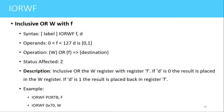The next instruction is IORWF — Inclusive OR W with the file register. The syntax is IORWF F, D, where F is any register and D is either 0 or 1 depending on the destination of the result. If D is 0 the destination is the working register, and if D is 1 the destination is the file register. The operation performed is that the value in the working register is ORed with the value in the file register. An example is IORWF PORTB, F — the value in PORTB will be ORed with the working register.